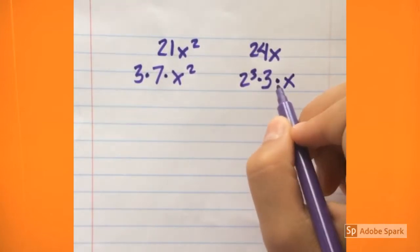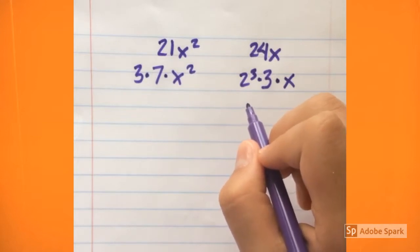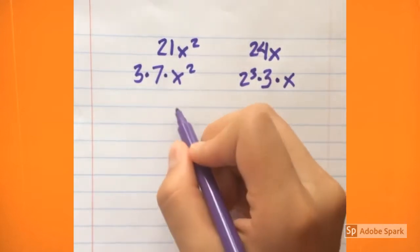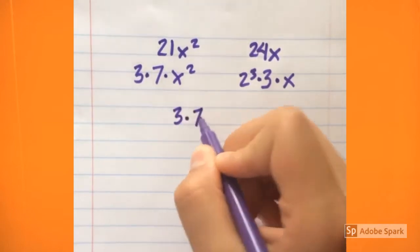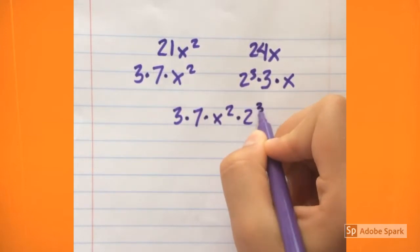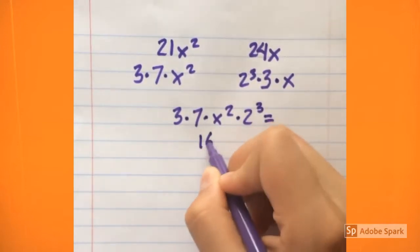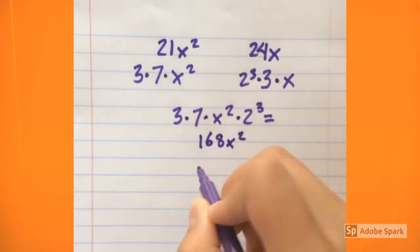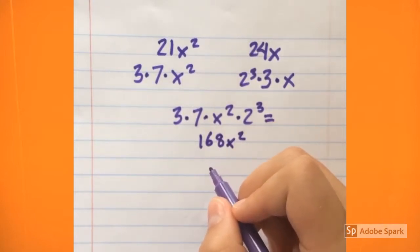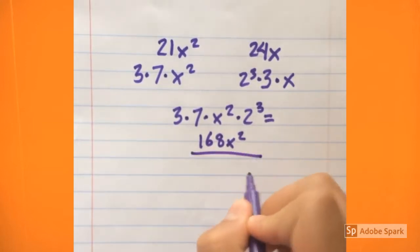We now take out the factors that have the highest exponents from each expression and then multiply them to get the answer. This means that we multiply 3, 7, x squared, and 2 cubed, which equals 168x squared. So the least common multiple of 21x squared and 24x is 168x squared.